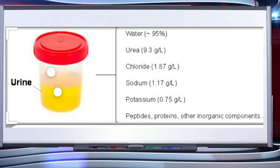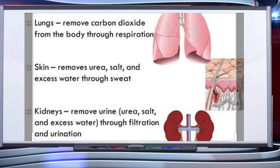Various conditions can affect the characteristics of urine. Analysis of urine helps in diagnosing many metabolic disorders as well as malfunctioning of the kidney. For example, the presence of glucose and ketone bodies in urine is indicative of diabetes mellitus.